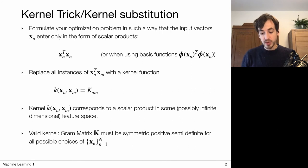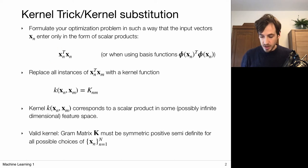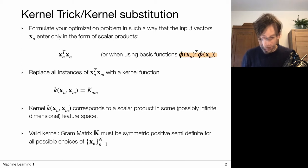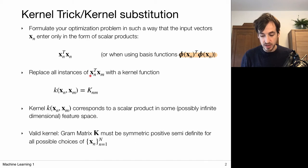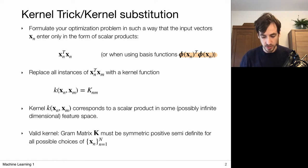The kernel trick works by formulating your optimization problem in such a way that the input vectors x_n only enter in the form of scalar products, or when working with basis functions in the following form. We then replace all instances of this scalar product between x_n and some other data point x_n' with a particular kernel function. This kernel function replaces the role of the scalar product and represents some sort of generalized or nonlinear inner product.